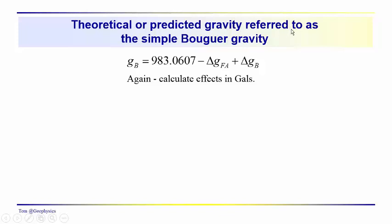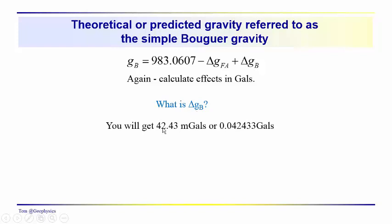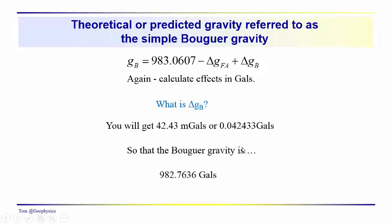The simple Bouguer gravity — referred to as G-sub-e — combines the free air gravity with the Bouguer plate effect, calculating all effects in gals. The delta G for the plate comes out to 42.43 milligals, or 0.042433 gals. Assuming we can ignore tide and drift, the Bouguer gravity turns out to be 982.7636 gals.